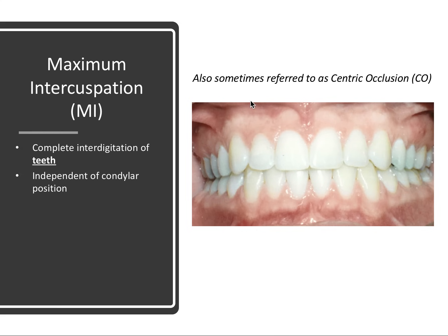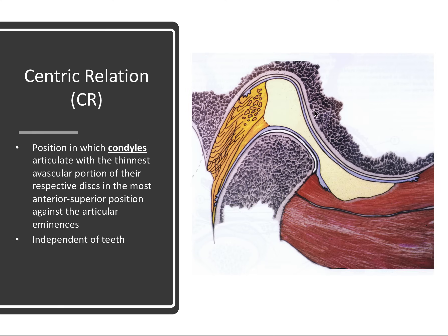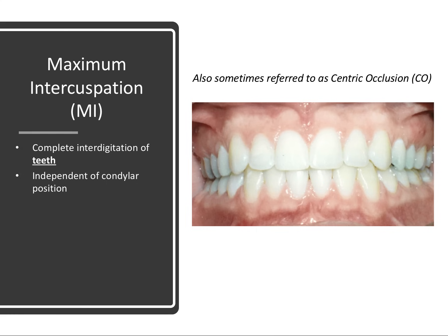Maximum intercuspation, also sometimes referred to as centric occlusion, has to do with the complete interdigitation of the teeth. This is in complete contrast to centric relation. Maximum intercuspation is all about the teeth — we want the teeth completely locked together. Whereas in centric relation it was all about the condyle, maximum intercuspation is the opposite: the teeth are locked together, and we don't really care about where the condyles are.